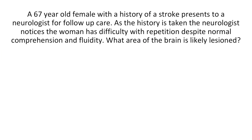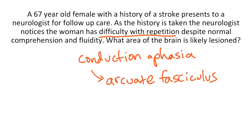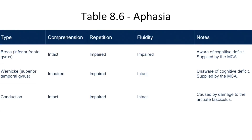A 67-year-old female with a history of stroke presents to a neurologist for follow-up care. The neurologist notices the woman has difficulty with repetition despite normal comprehension and fluidity. The patient can speak and understand normally, but the ability to repeat is impaired. This type of presentation is unique to conduction aphasia, which is caused by damage to the arcuate fasciculus. From Table 8.6, conduction aphasia results in impaired repetition with intact comprehension and fluidity.